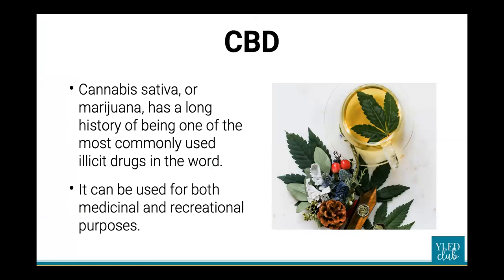Cannabis sativa, or marijuana, has a long history of being one of the most commonly used illicit drugs in the world. It can be used for both medicinal and recreational purposes. Historically, cannabis has been used for at least 5,000 years, originating basically in Romania and China. Cannabis was widely used as medicine in the 19th and 20th centuries in the United States as a pain reliever, sleep aid, and anti-convulsant.